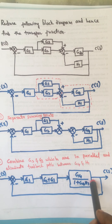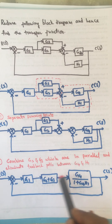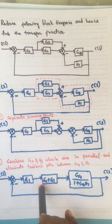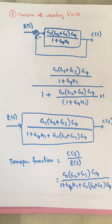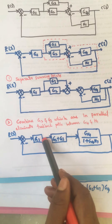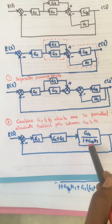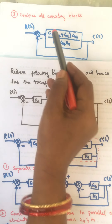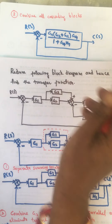Next, we have to combine all these blocks which are in cascade. Note that you should give a bracket around G2 plus G3. So combining all blocks in cascade gives us G1 into (G2 plus G3) into G4, whole divided by 1 plus G4·H1. Just check: G1 into (G2 plus G3) into G4 divided by 1 plus G4·H1.